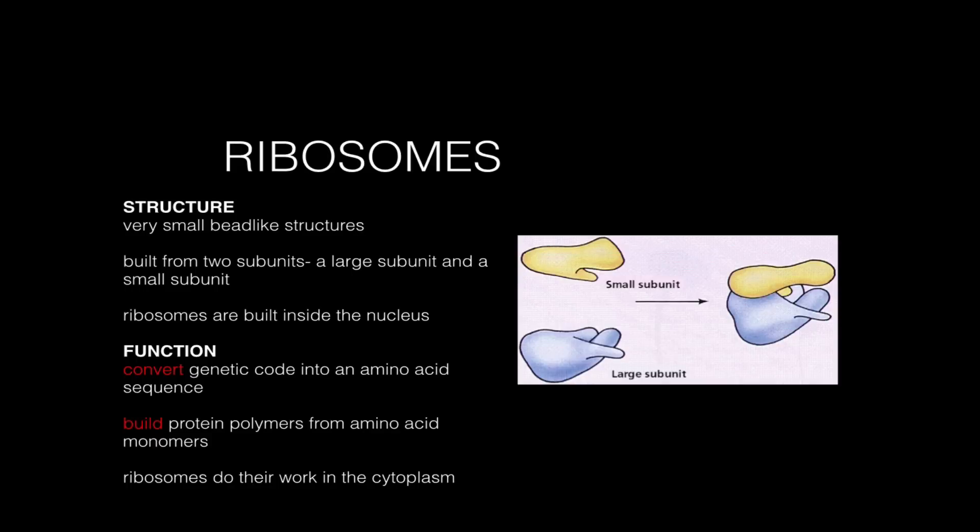Structurally ribosomes are very small, they look a lot like beads under the microscope and they are actually built from two subunits. Ribosomes are assembled from a small subunit and a large subunit which combine to build a whole ribosome, and when both parts are together the ribosome can do its job.